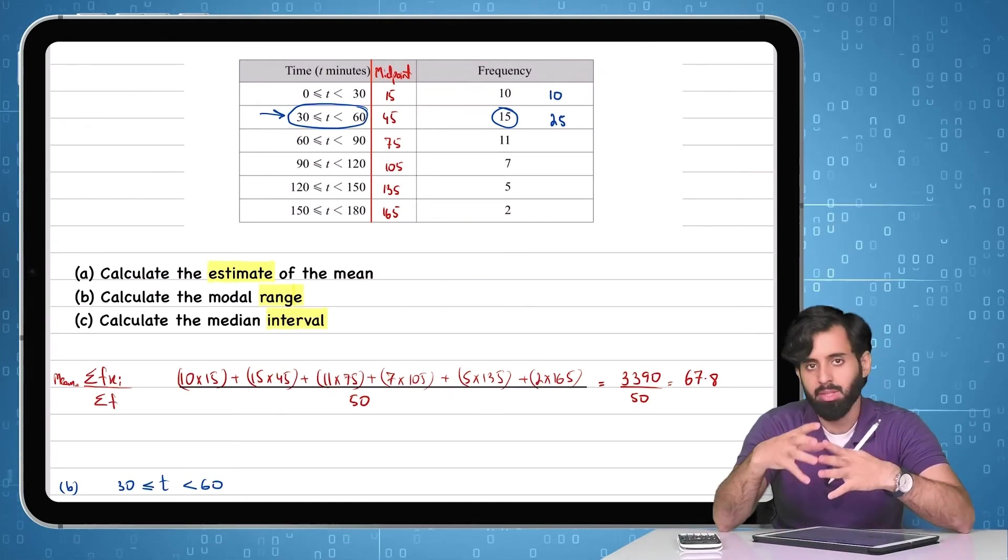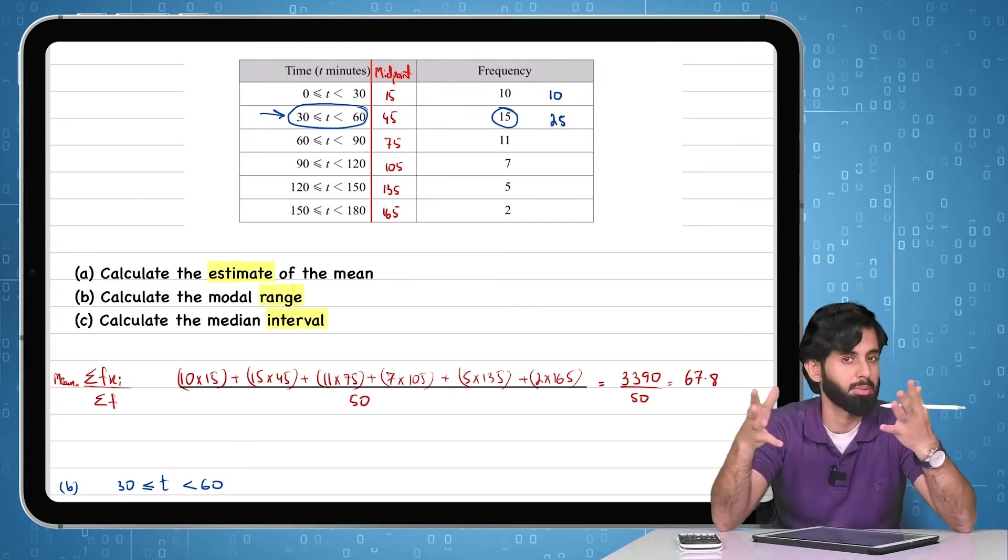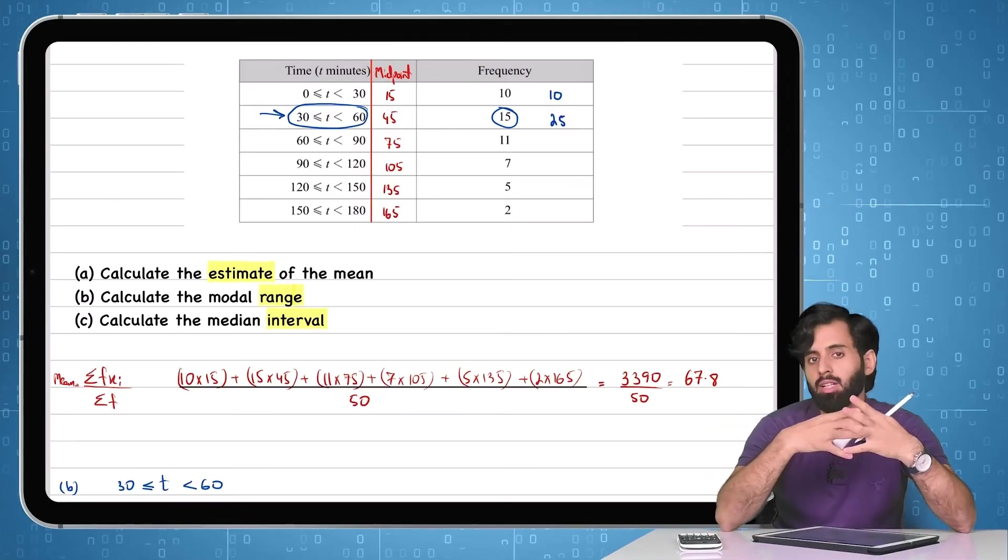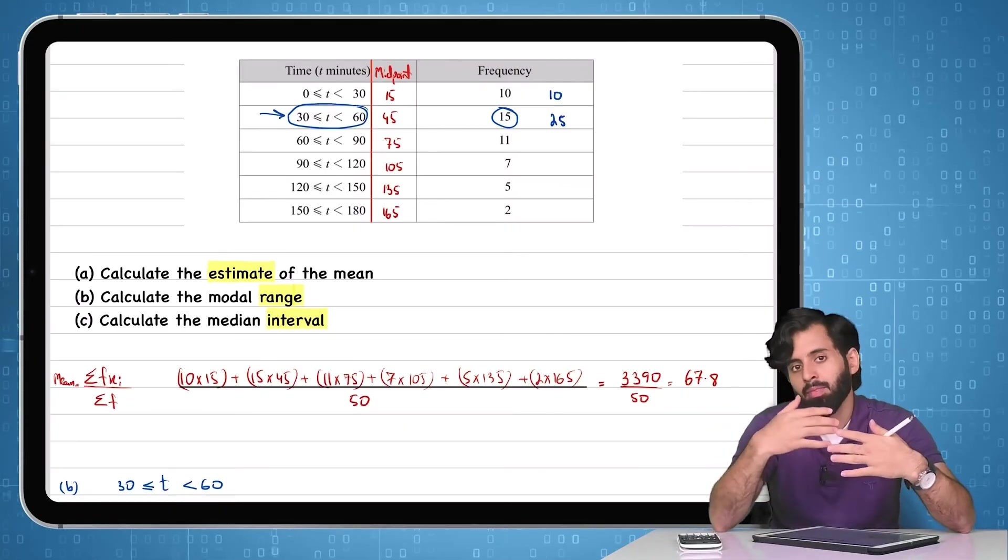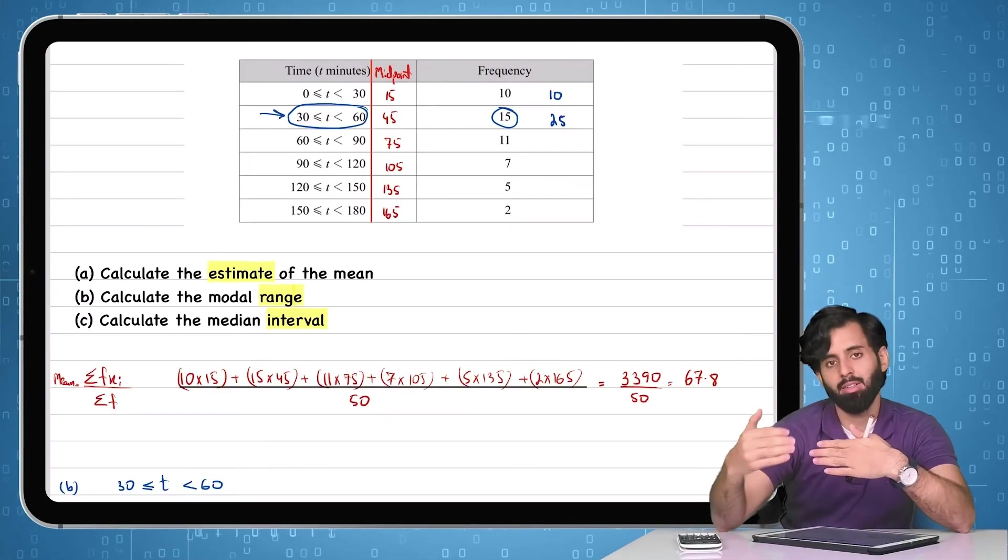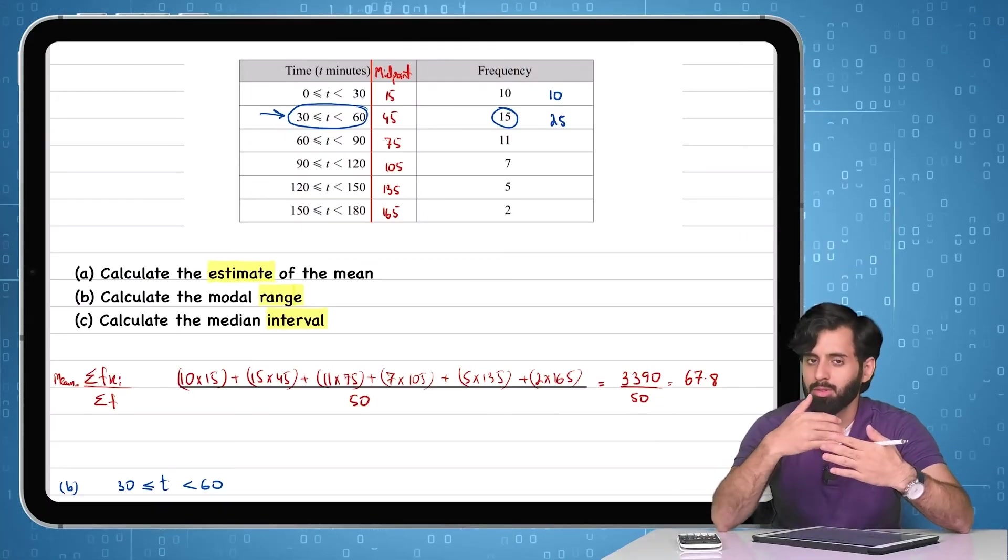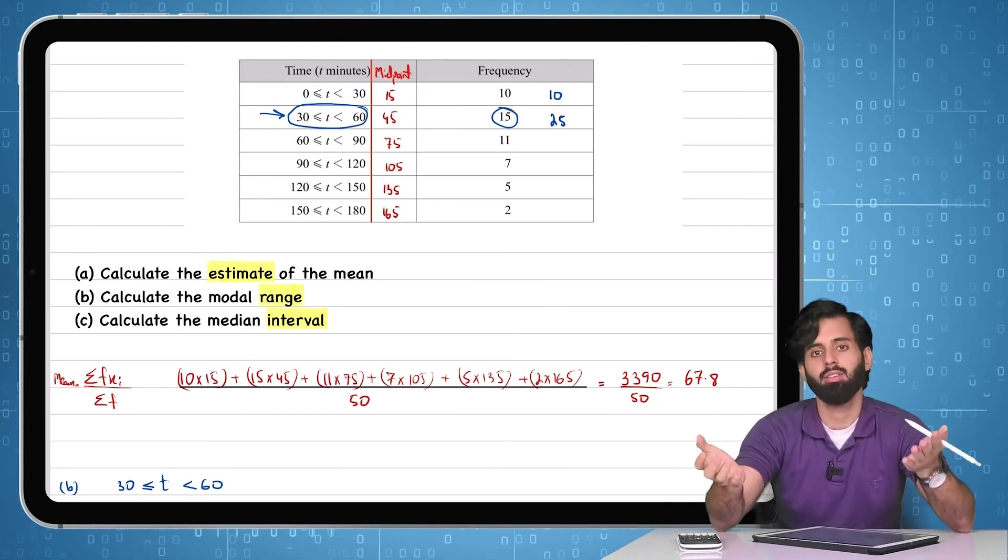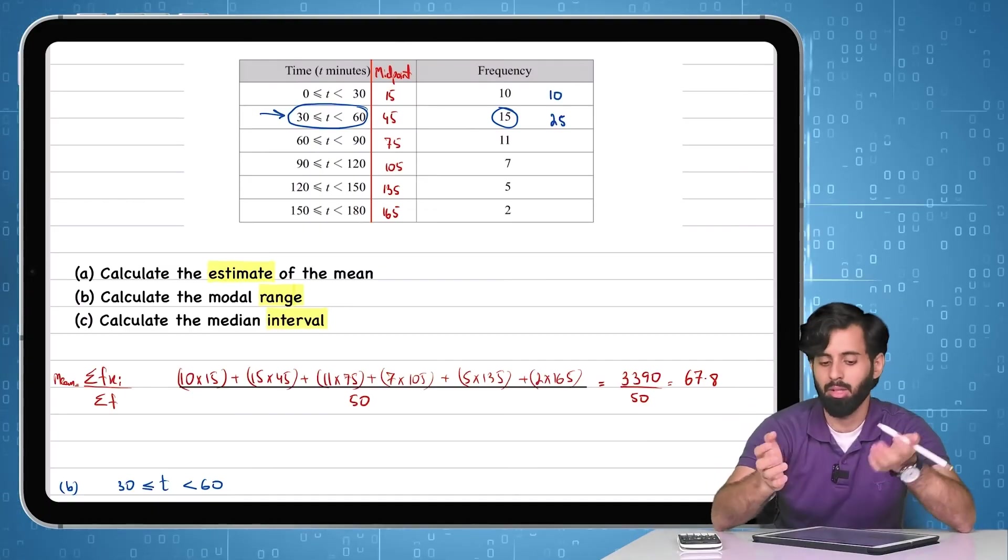So that means 50% of 50 is 25. You're going to start calculating the cumulative frequency. The class where the cumulative frequency is equal to the median, then that right there is your median interval.